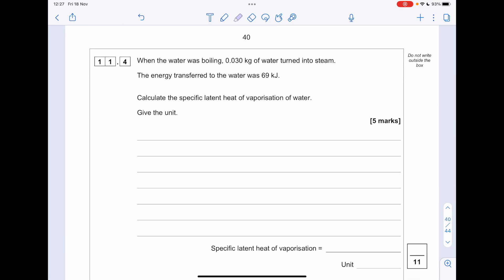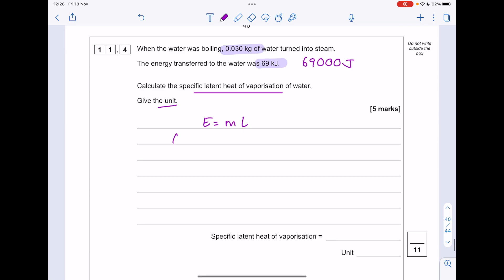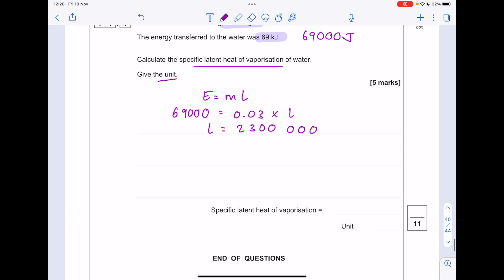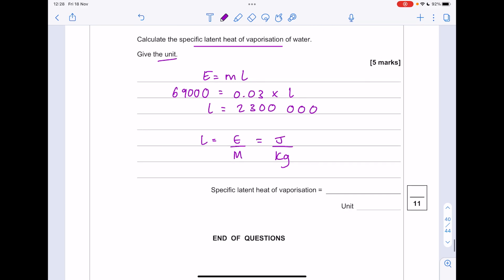When the water was boiling, 0.03 kilograms of water turned into steam. The energy transferred was 69 kJ. Calculate the specific latent heat of vaporization of water. Give you a unit. So the energy requirement was 69,000. The mass was 0.03. And we're after L. So divide both sides by 0.03. And then what about units? Well, let's rearrange the subject of that equation. Substitute in the units for energy, which is joules. The mass was kg. So our answer is...